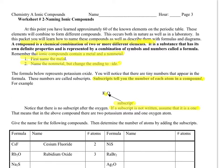different elements on the periodic table. Now in this packet we're learning what happens when specifically a metal and a nonmetal combine. Ionic compounds are a metal and a nonmetal. In the next packet we'll talk about